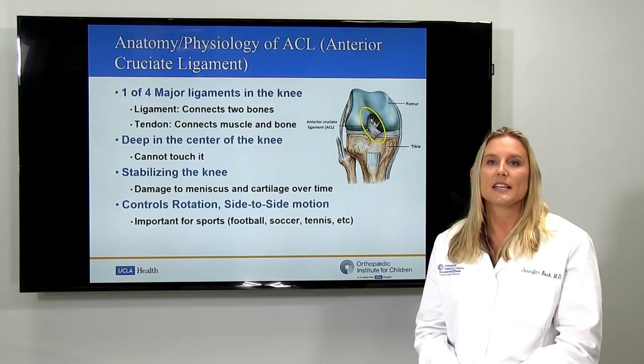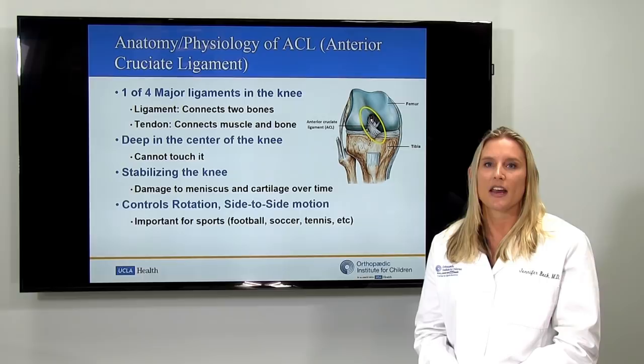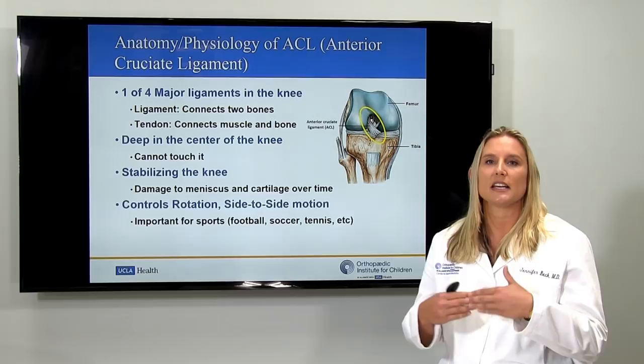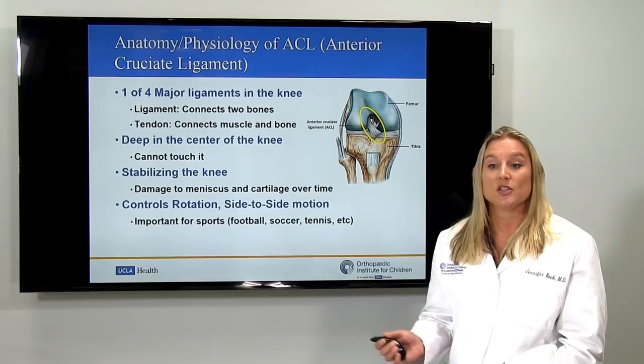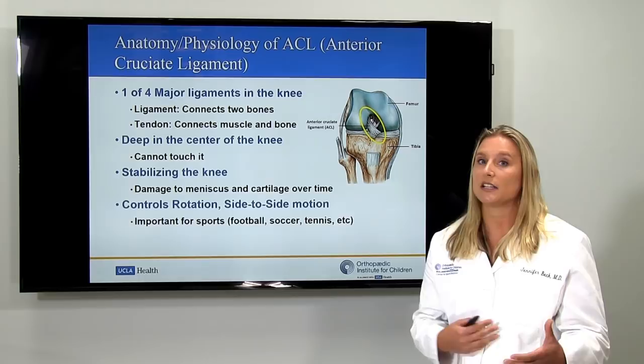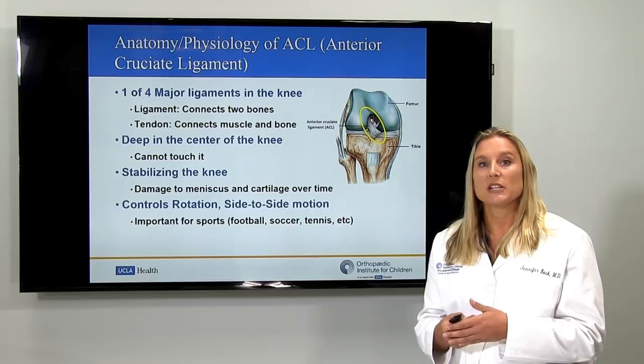ACL stands for anterior cruciate ligament. Anterior means it attaches in the front part of the knee, on the front part of the shin bone. Cruciate means it's a crossing-type ligament — it goes across in a side-to-side trajectory. A ligament is something that connects two bones. This particular ligament connects the end of your femur, or thigh bone, to the top part of your tibia, or shin bone.